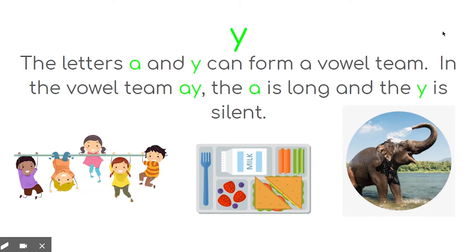Knowing that A-Y makes the long sound A, how might you spell play? Yes, P-L-A-Y. What about tray? Tray is spelled T-R-A-Y. What about spray? That one has a three-letter blend, S-P-R-A-Y.